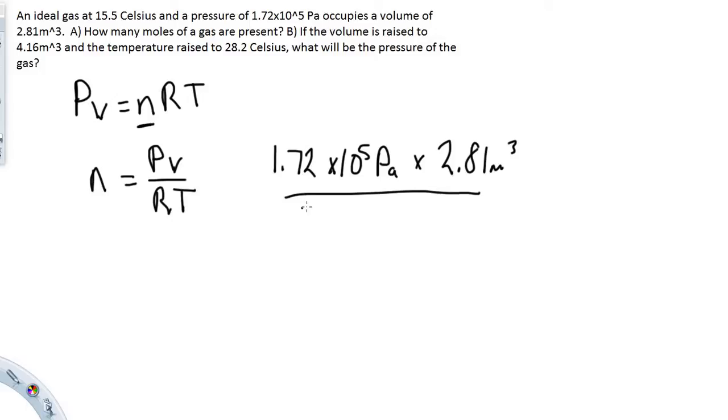...the R value, the constant. The number for that is 8.31 times the temperature. And you have to make sure because this is in Celsius you want to convert it over to Kelvin. So what that's going to be is 15.5 degrees Celsius plus 273, which equals 288.5.